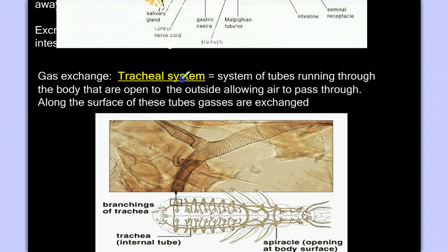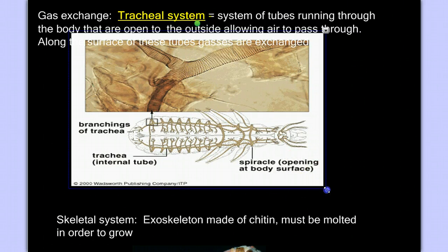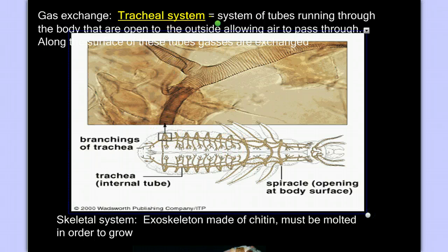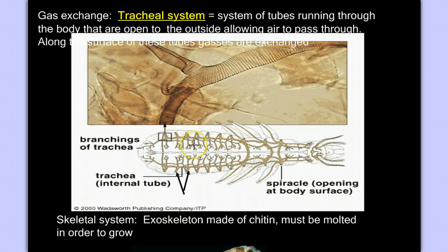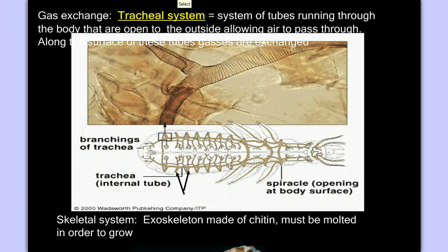Each of those little openings leads to a tube, or system of tubes, called a tracheal system — the gas exchange system of insects. Every opening on the outside of the body leads to this highly branched system of tubes. Lots of branching gives lots of surface area, and lots of surface area gives lots of diffusion. This branched system throughout the animal's body is basically like air conditioning ductwork that lets air pass through, and as it does, carbon dioxide is exchanged for oxygen.